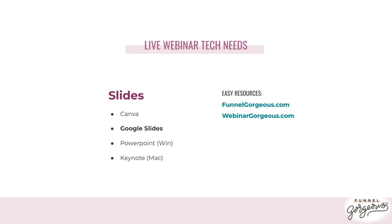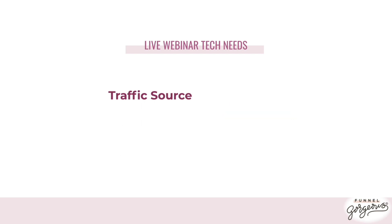The next thing you'll need is some sort of traffic source — something pointing people to sign up for your live webinar. The first option is organic social: posts on Facebook, Instagram, IGTV, or any social media platform telling people you're going to have a live webinar. Pretty much any organic social works except YouTube, which isn't great for live events since people watch videos well after the fact.